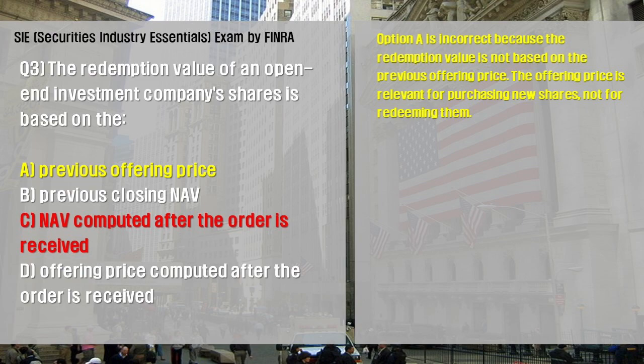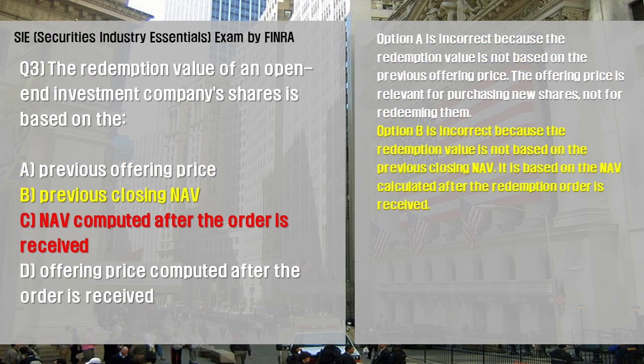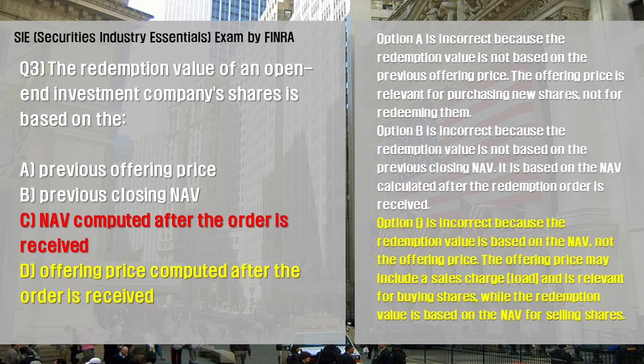Option A is incorrect because the redemption value is not based on the previous offering price; the offering price is relevant for purchasing new shares, not for redeeming them. Option B is incorrect because the redemption value is based on the NAV calculated after the redemption order is received, not the previous closing NAV. Option D is incorrect because the redemption value is based on the NAV, not the offering price. The offering price may include a sales load and is relevant for buying shares, while the redemption value is based on the NAV for selling shares.